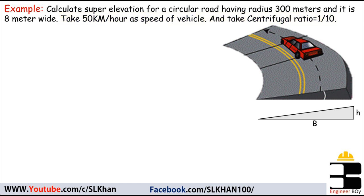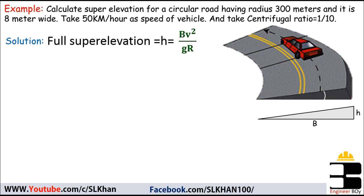As you can see, the given data is enough to calculate the value of full super elevation. In the solution, our approach is to work out super elevation: h = bv² / gr. The data and formula are given, so the only thing we have to do is plug the values into the formula.